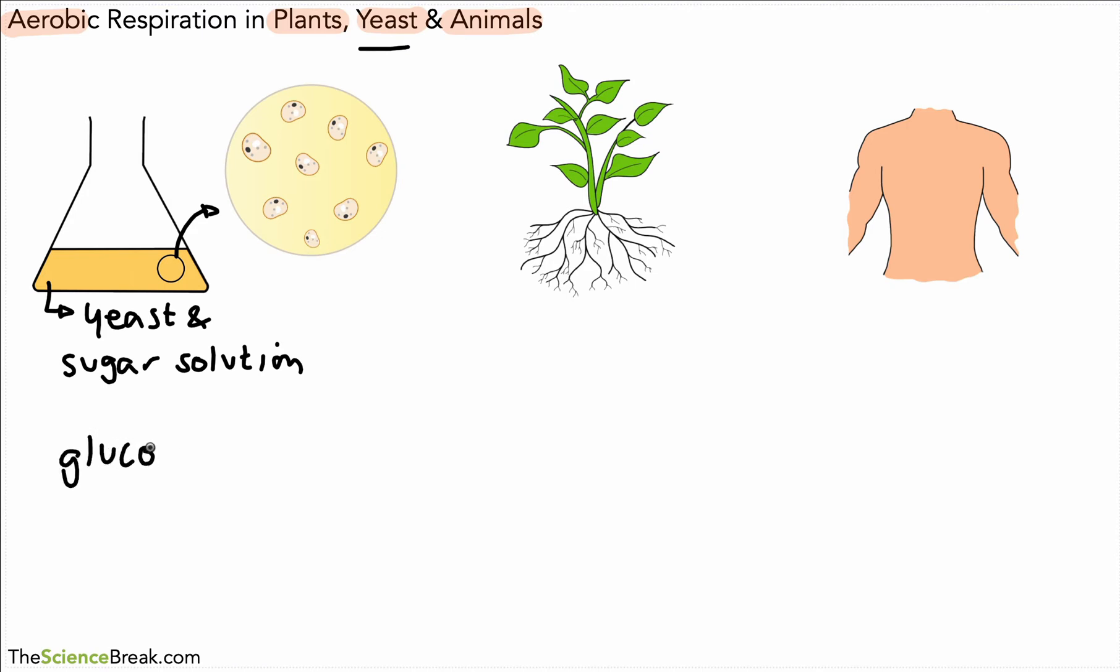We have glucose, and because this is aerobic respiration that's with oxygen, we have plus oxygen, and then we use an arrow, remember not to say equals, we have an arrow and that gives us carbon dioxide plus water. And this process is the same for whether we're talking about plants, yeast and animals. If we're talking about aerobic respiration, we're going to use the same summary equation to describe what's going on.